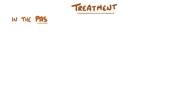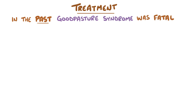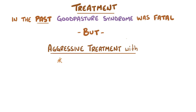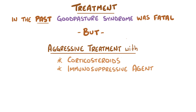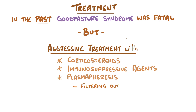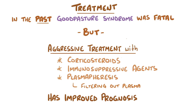In the past, Goodpasture syndrome was usually fatal, but aggressive treatment with corticosteroids and immunosuppressive agents, as well as plasmapheresis — which involves filtering out the fluid part of the blood, or plasma — has improved the prognosis, with fewer individuals developing chronic renal failure and needing dialysis.